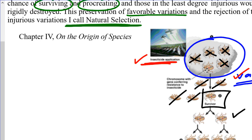The mutation will become more common, and the insecticide will become less and less effective. We don't have the evolution of new species here because this is over just a very short number of generations involving only one single trait — resistance to the insecticide. But if we have long periods of time, other mutations taking place, and isolation of the population so they're no longer able to interbreed — sufficient time on the geologic time scale — that could lead to new species evolving.